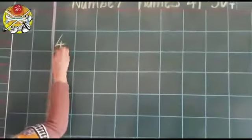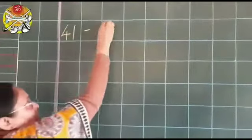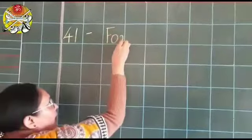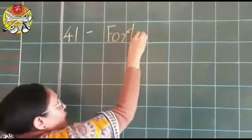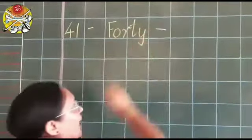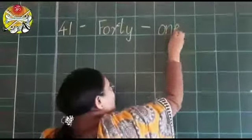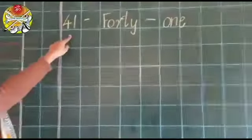41. 41 dash F-O-R-T-Y, 40. Next box, we will put the dash and write the spelling O-N-E, 1. 41.